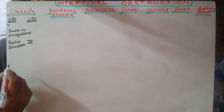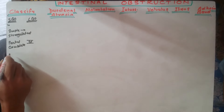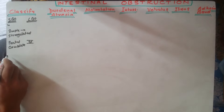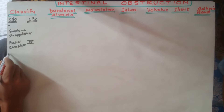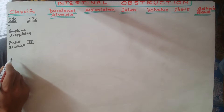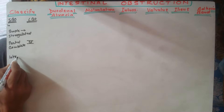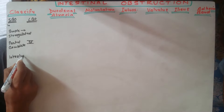Another classification is according to the cause behind the obstruction. If the cause is inside the lumen, that will be called an intraluminal type of obstruction. This is the most important classification type in which you have to remember some of the causes — what are the intraluminal causes for obstruction?